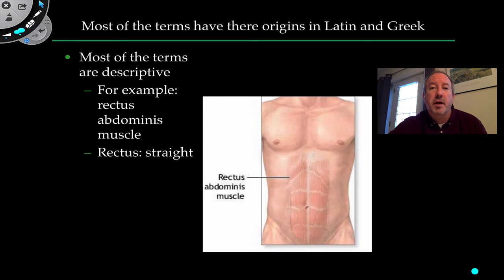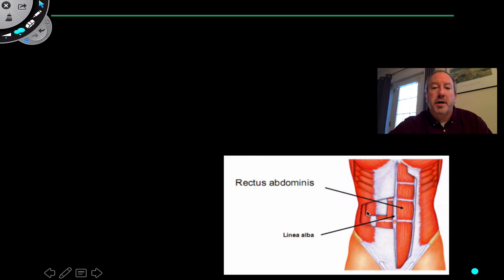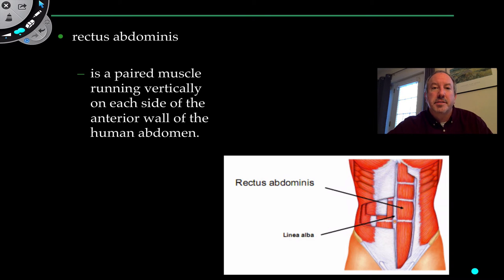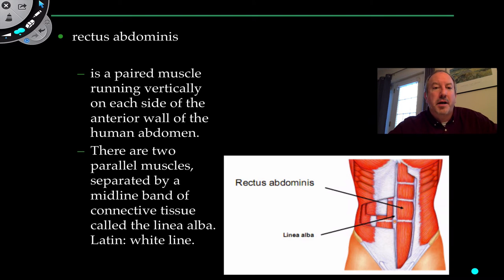Many anatomical terms have their origins in Latin and Greek, which is kind of fun. For example, these parallel muscles are called the rectus abdominis — 'rectus' meaning straight — found in the abdominal area below the diaphragm, not the thoracic area above. They are separated by a band of connective tissue called the linea alba — 'linea' meaning line and 'alba' meaning white — a white line separating the rectus abdominis on each side.